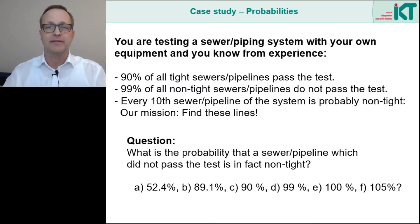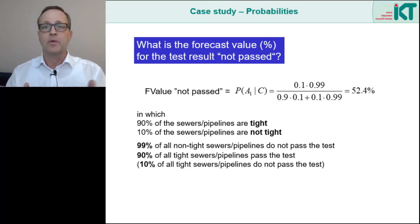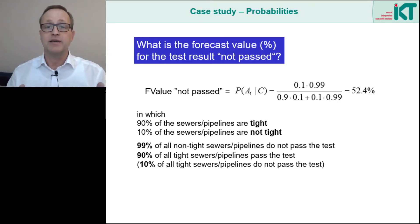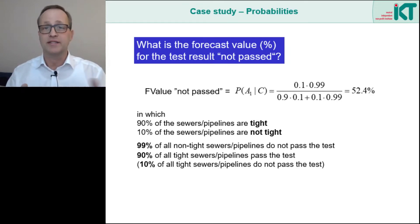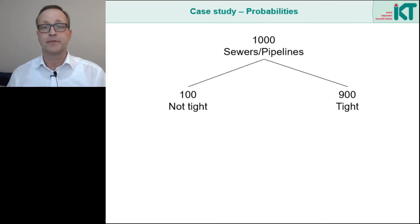Mathematically, this is easy to explain. We use Bayes' theorem and can directly determine the forecast value from the individual probabilities — 52.4% in this case. This seems straightforward, but it hardly helps to understand why the result is like that. Therefore, I want to clarify the whole thing with the help of concrete numbers. Let's assume we have 1000 pipelines that our tester has checked in total.